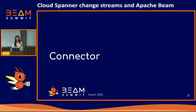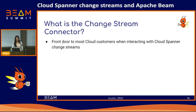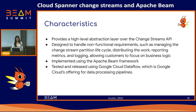Next we'll talk about the change stream connector. The change stream connector is the front door to most cloud customers when interacting with Cloud Spanner change streams. It provides a high-level abstraction layer over the change stream API, designed to handle non-functional requirements such as managing the change stream partition lifecycle, distributing the work, reporting metrics and logging — allowing customers to focus on business logic. It is implemented using the Apache Beam framework and tested and released using Google Cloud Dataflow, Google Cloud's offering for data processing pipelines.